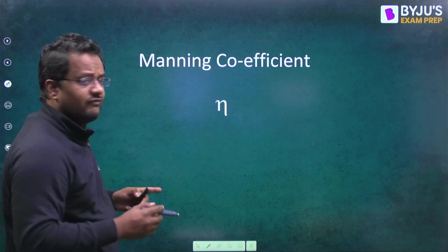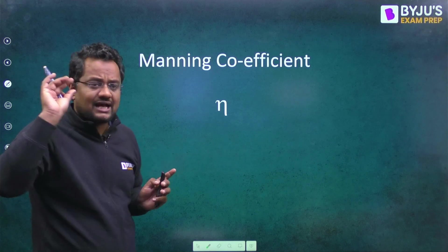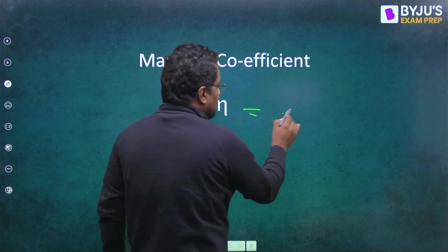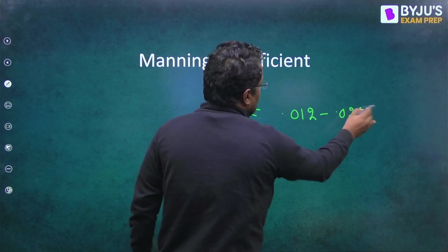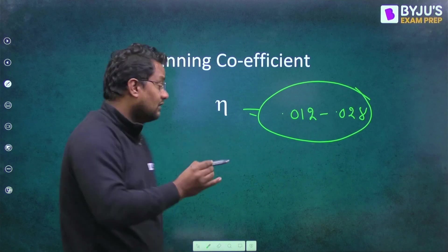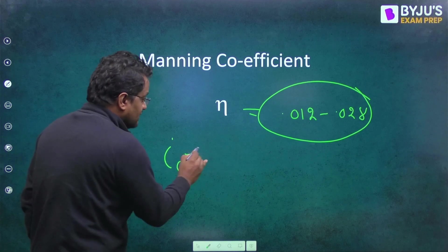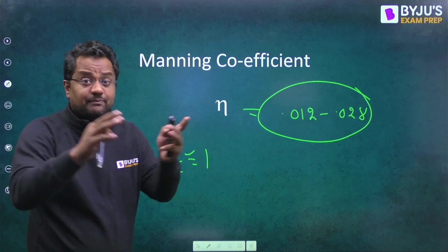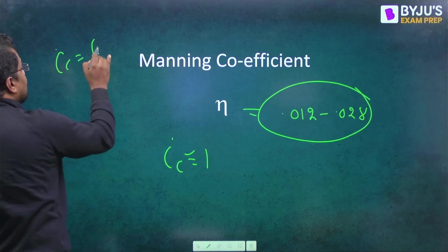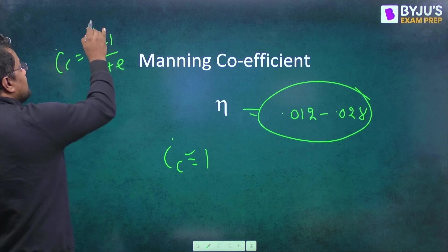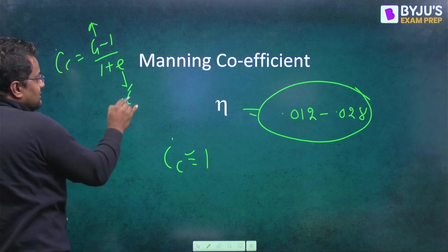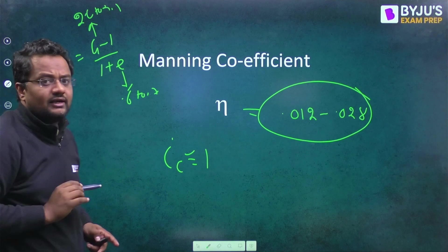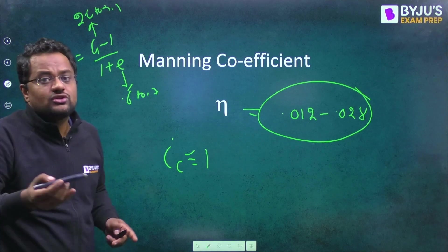Moving further, whenever in open channel flow, eta values are asked. So eta value will not be 2, will not be 3, will not be 5, will not be 100. It will be 0.012 to 0.028 in this range only. Similarly, hydraulic gradient IC is always around 1. If your answer is not 0.9, 0.1, 0.91, 1.1, that means you are wrong. Because IC is G minus 1 upon 1 plus E. G is 2.6 to 2.7. E is 0.6 to 0.7. So both numerator and denominator are almost same. So IC should be near about 1.